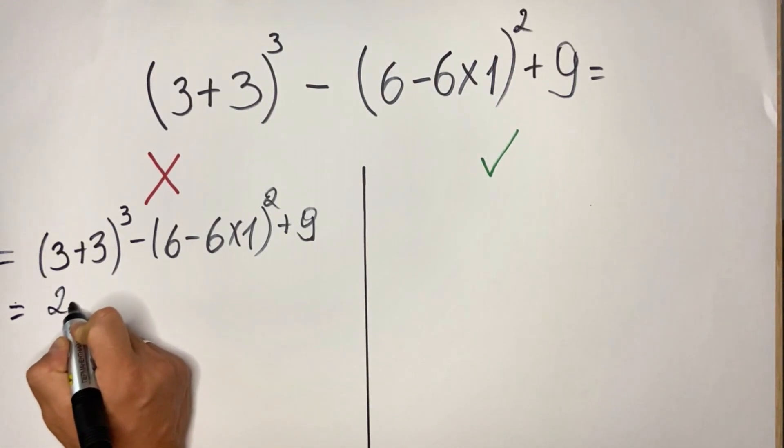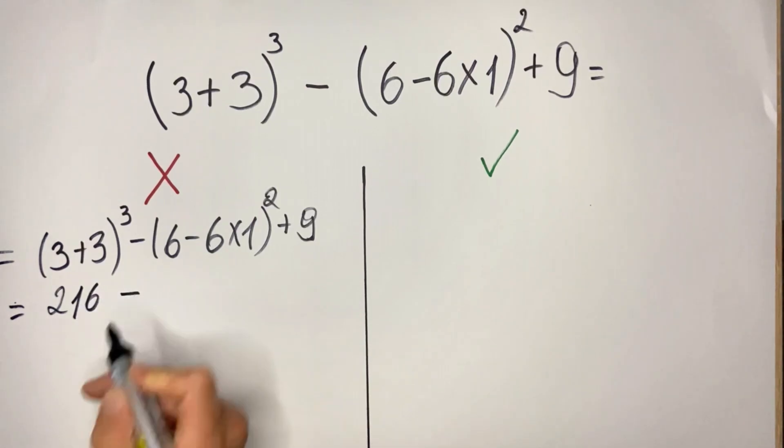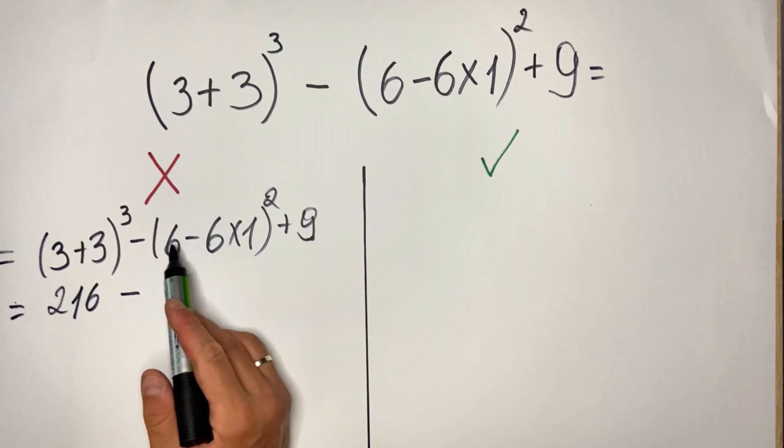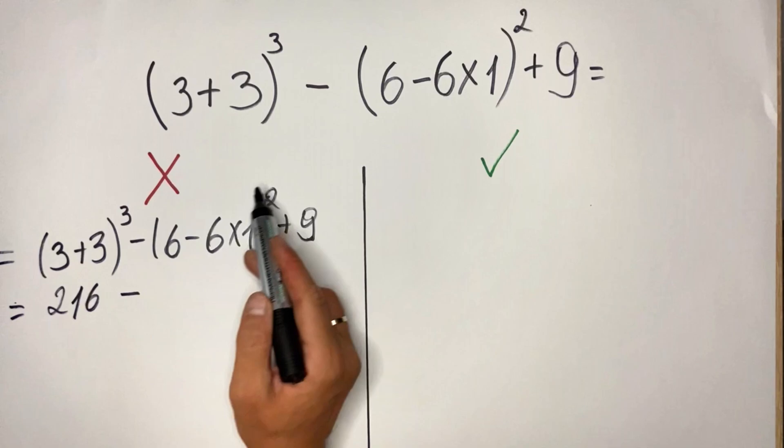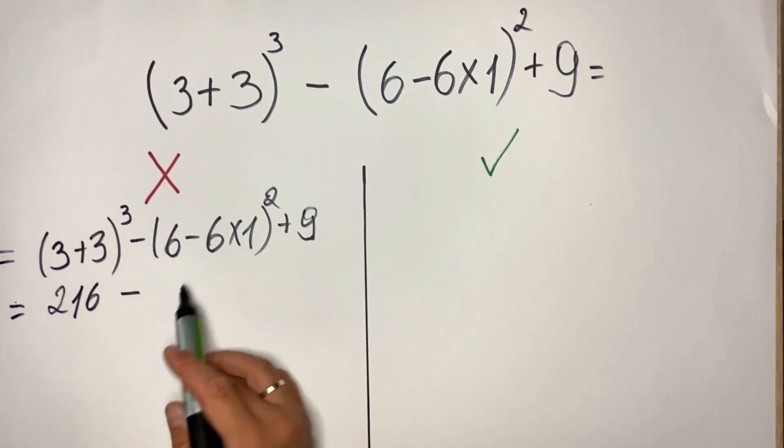So we have here 216 minus—I'll put here the mistake they are doing. People first do 6 minus 6, which is 0, multiplied by 1. 0 as well. 0 squared is 0.